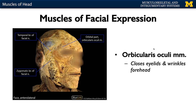Let's talk about a few of the more important muscles of facial expression. We'll start with the one that surrounds your eye: the orbicularis oculi. 'Oculi' relates to the eye. This is a sphincteric muscle, meaning it allows for closing to occur — not only closing your eyelids, but also wrinkling your forehead. It allows for closing, not the opening, of the eye.